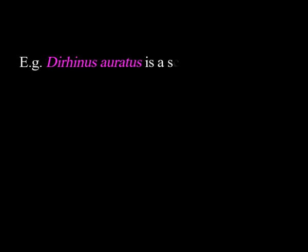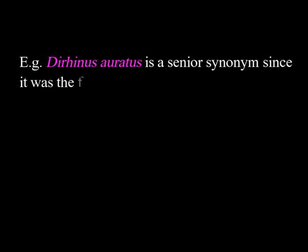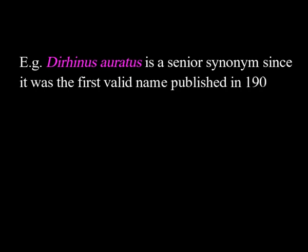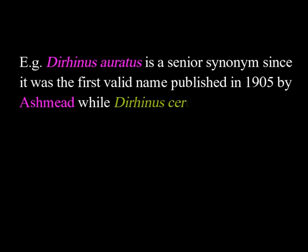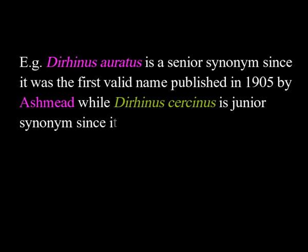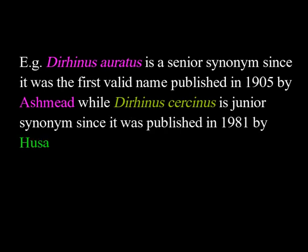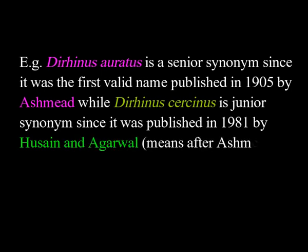For example, Derenas oratus is a senior synonym since it was the first valid name published in 1905 by Ashmead, while Derenas cercinus is a junior synonym since it was published in 1981 by Hussein and Agrawal — that is, after Ashmead 1905.